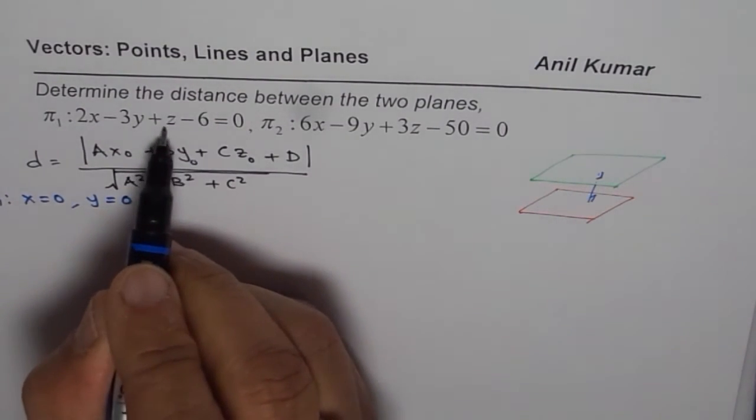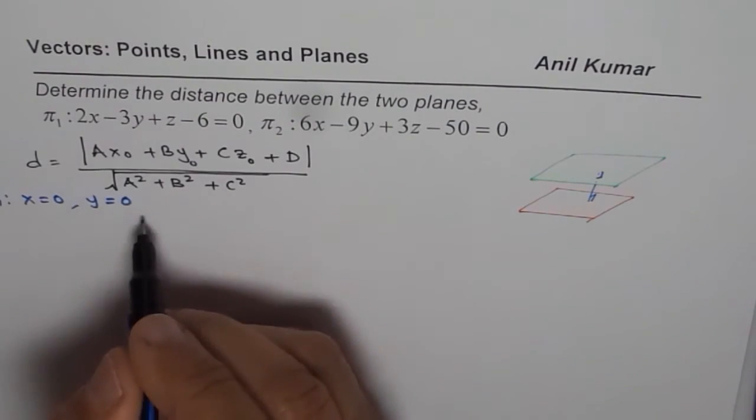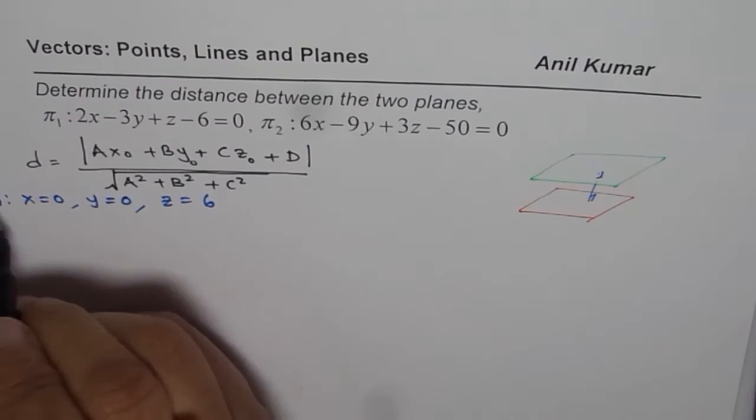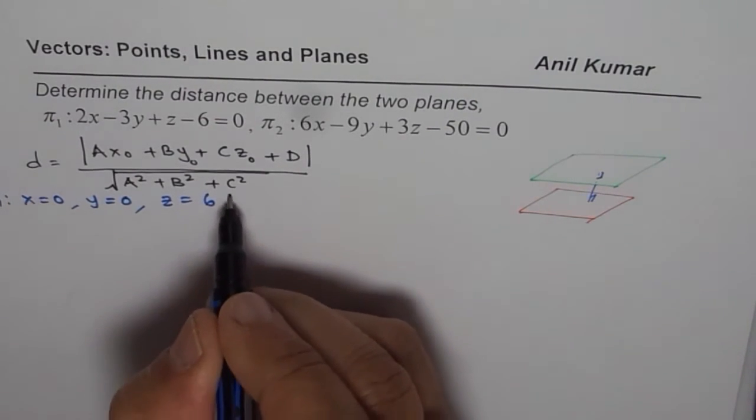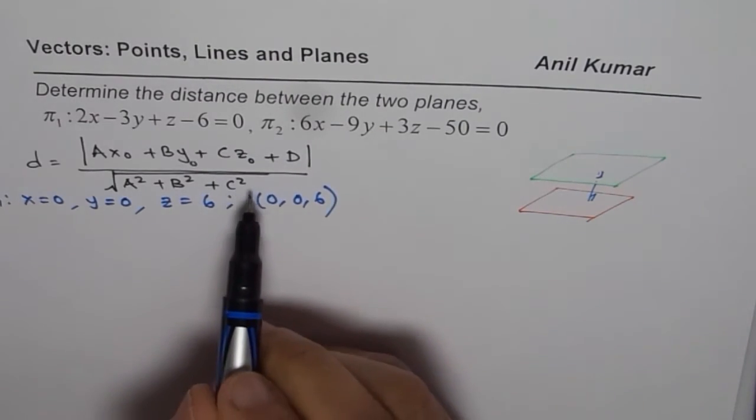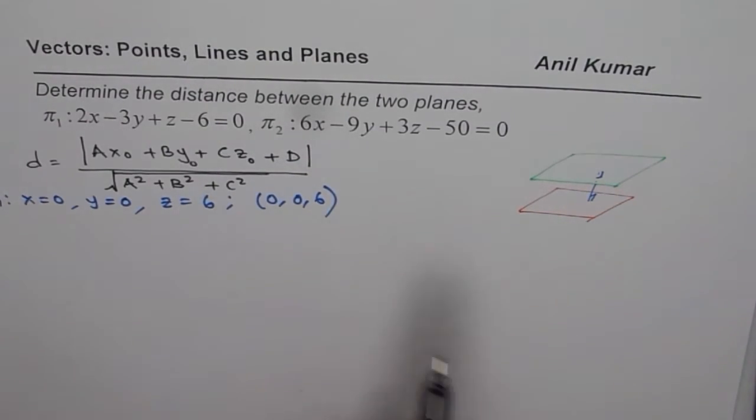Then we get z = 6. Therefore we'll consider this point which indeed is (0, 0, 6) for us and substitute this point in that equation to find the distance.